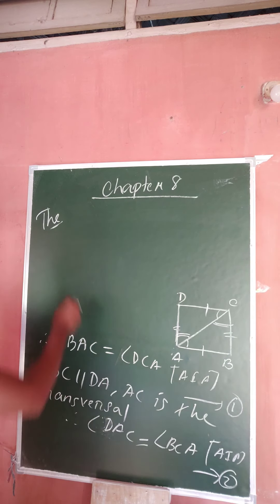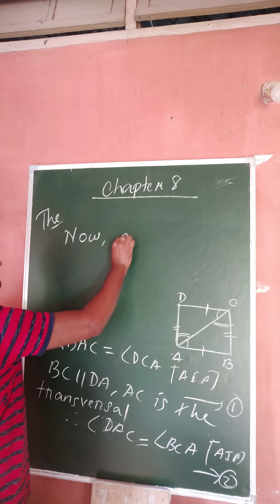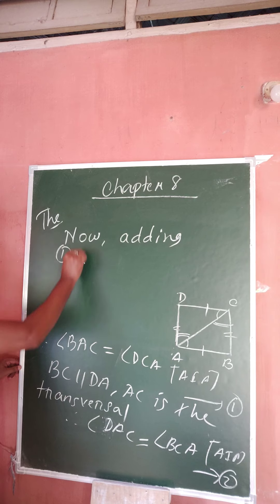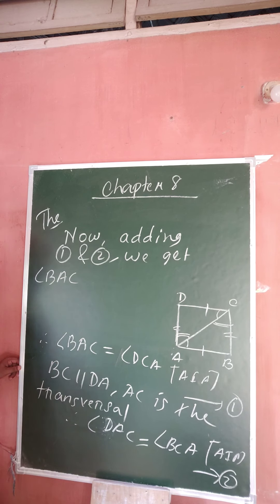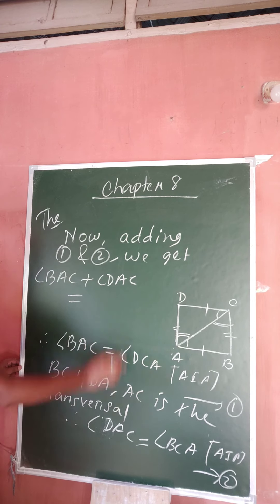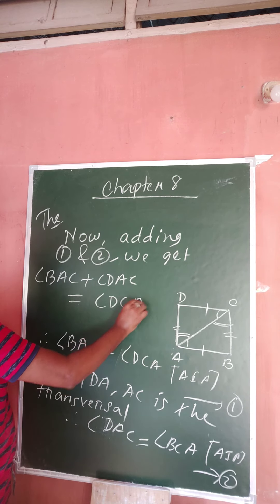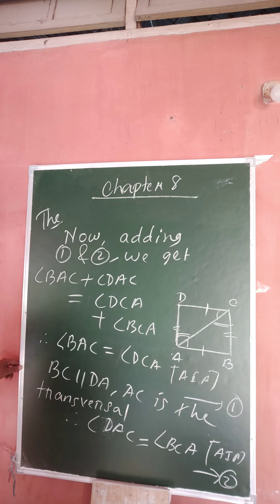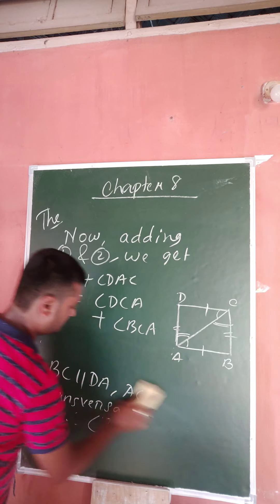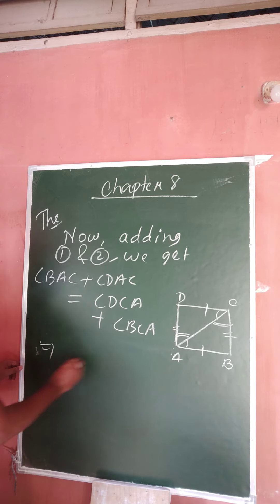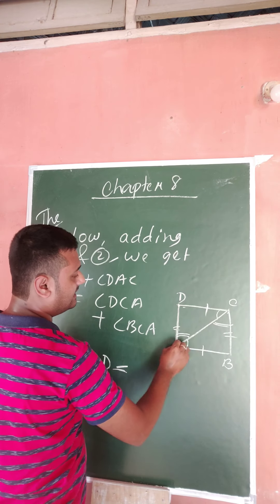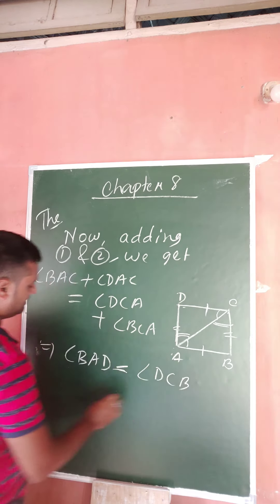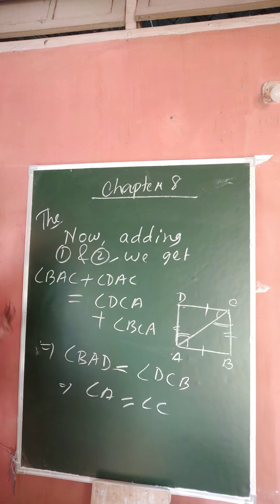Now adding statements one and two, we get: angle BAC plus angle DAC equals angle DCA plus angle BCA. The left side, BAC plus DAC, gives the full angle BAD. The right side, DCA plus BCA, gives the full angle DCB. Therefore, angle A equals angle C — opposite angles are equal.